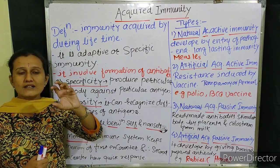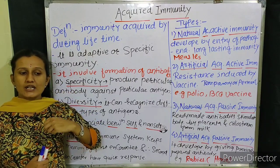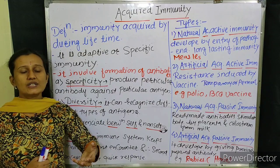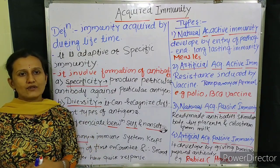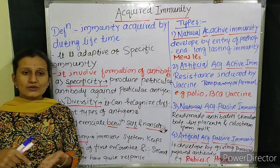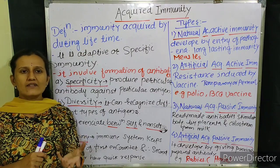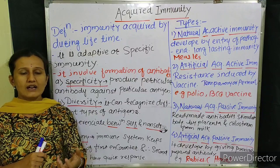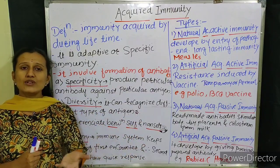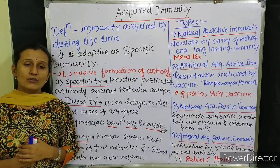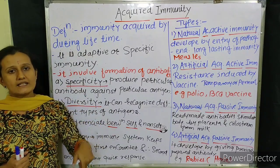The body learns everything about how to fight with that antigen — what the reactive agent is, what opposing proteins are formed. This total learning capacity of the body is called acquired immunity. The body is acquiring knowledge about that antigen and learning how to generate a stimulus against it — how that antigen attacks and how to fight back.